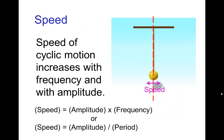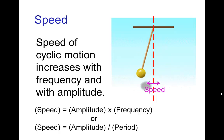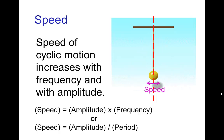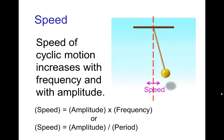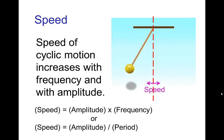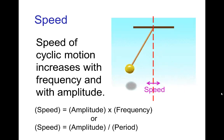The last element is the speed of the motion. The speed depends on both frequency and amplitude — the larger the frequency or the larger the amplitude, the faster the motion. In fact, speed can be defined as amplitude times frequency, which is the same as amplitude divided by the period.